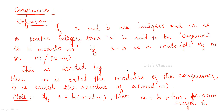So first let us see the definition of congruence. If a and b are integers and m is a positive integer, then a is said to be congruent to b modulo m if a minus b is a multiple of m, or equivalently m divides a minus b. So a minus b can be written as m into something.